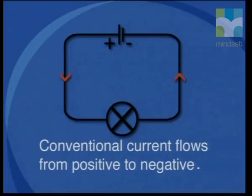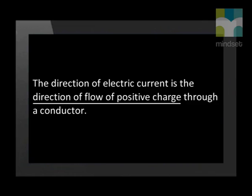It became the convention, or the accepted way, to regard electrical current as the flow of positive charge from the positive terminal of the cell to the negative terminal. We still use the conventional direction when marking currents on circuit diagrams. We adopt this convention to honor the work of the great Michael Faraday. You have to learn the direction of conventional flow, so please make sure that you write it down.